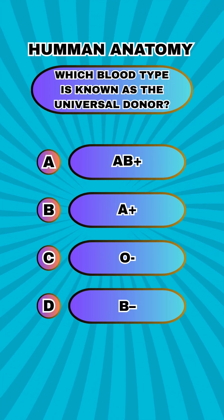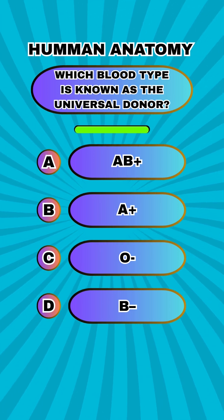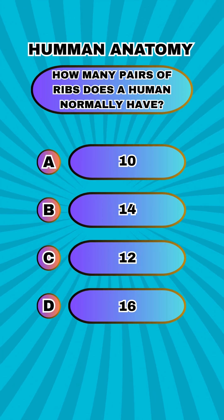Which blood type is known as the universal donor? How many pairs of ribs does a human normally have?